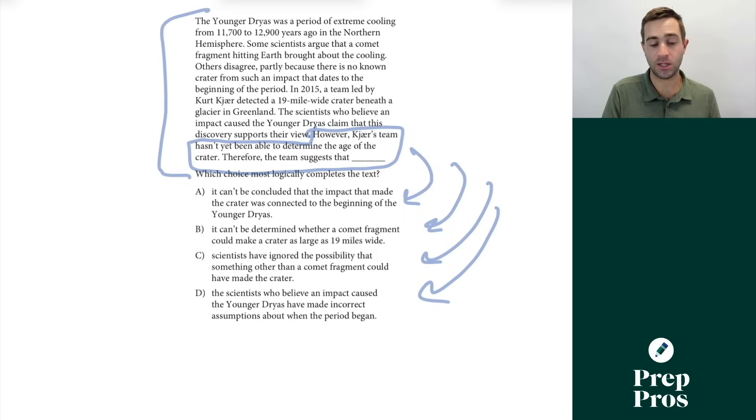However, Cayer's team hasn't yet been able to determine the age of the crater. Therefore, the team suggests what? Well, this lens really helps me understand what I'm looking for as I go back. We're focused on the fact that they can't determine the age of the crater. So let's see how age relates to what we talked about in the rest of the passage.